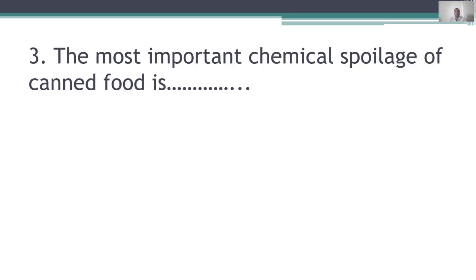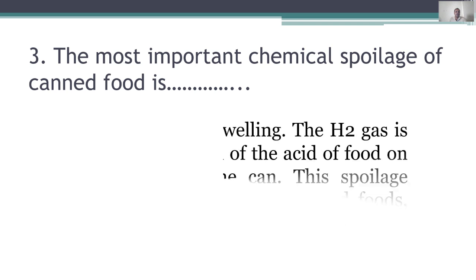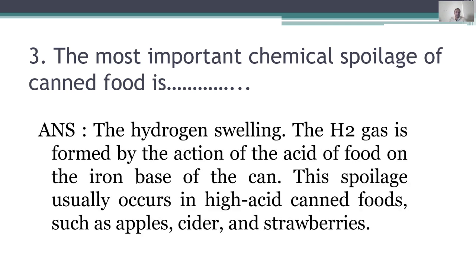Third question: the most important chemical spoilage of canned food is hydrogen swelling. Hydrogen gas is formed by the action of the acid in food on the iron base of the can. In iron-based cans, hydrogen swelling occurs. This spoilage usually occurs in high acid canned foods such as apples, ciders, and strawberries. So the most important chemical spoilage of canned food is hydrogen swelling.